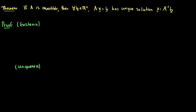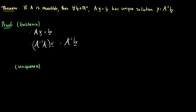We need to prove the solution exists. Assume A is invertible and Ax equals b. Since A has an inverse, we can left multiply both sides by it: A inverse times Ax equals A inverse times b. Using the associative property, A inverse times A is the identity matrix, so identity times x equals A inverse b, which gives us x equals A inverse b.